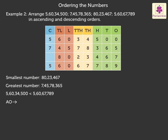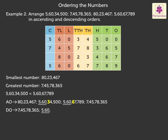Thus, the ascending order is 80,23,467, 5 crore 60,34,500, 5 crore 60,67,789, 7 crore 45,78,365. And the descending order is 7 crore 45,78,365, 5 crore 60,67,789, 5 crore 60,34,500, 80,23,467.